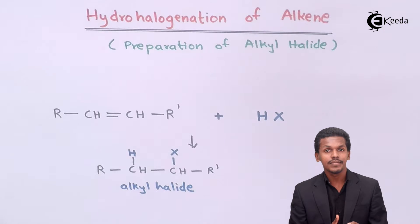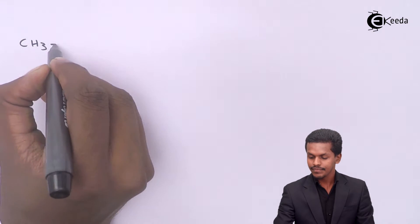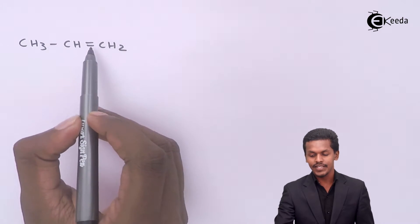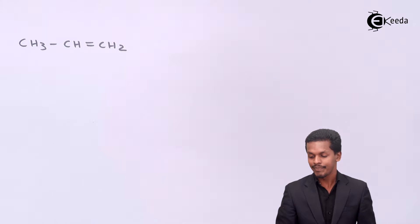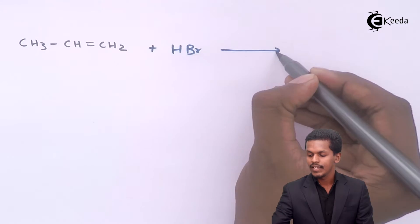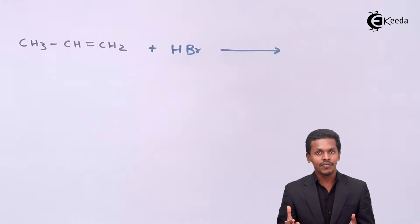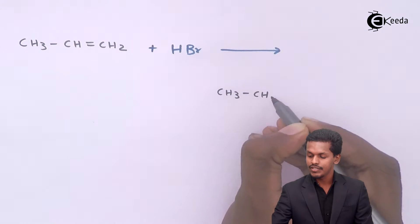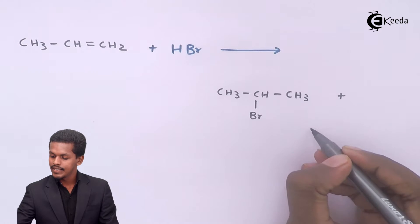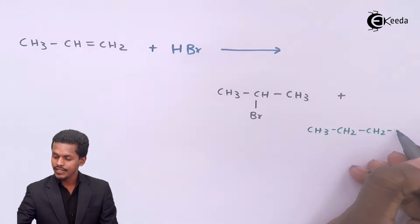As we discussed, an alkene can be unsymmetrical or symmetrical. Based on that, let us see which kind of product is formed as a major product. For example, if we take propene — which is unsymmetrical because dividing the carbon-carbon double bond gives different numbers of carbons on each side — and do the hydrohalogenation process using HBr, the two possible products are: CH3-CHBr-CH3 (secondary alkyl halide) and CH3-CH2-CH2Br (primary alkyl halide).